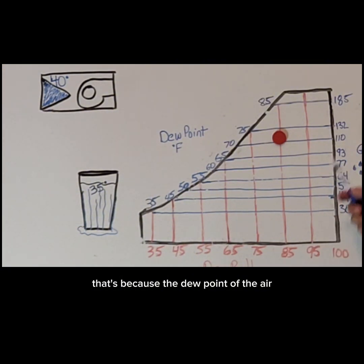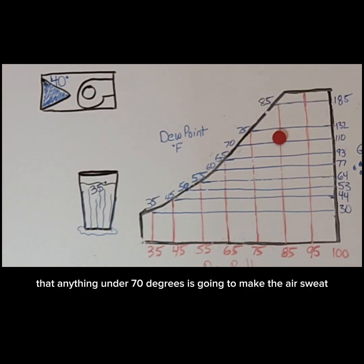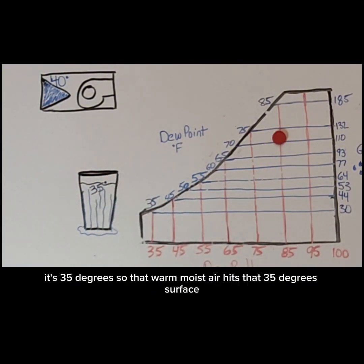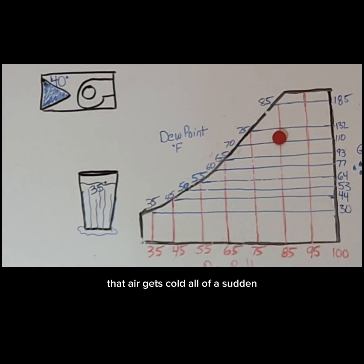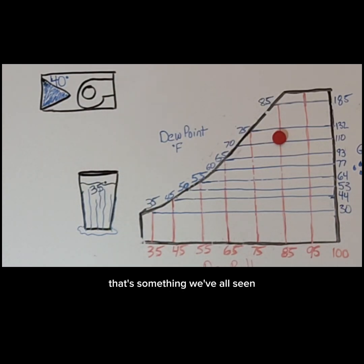That's because the dew point of the air — let's say the dew point is above 70 degrees — that means that anything under 70 degrees is going to make the air sweat. And obviously this glass is way under 70 degrees, it's 35 degrees. So that warm moist air hits that 35-degree surface, that air gets cold all of a sudden, and now it can't hold as much moisture and the moisture starts falling out of the air in the form of condensation.